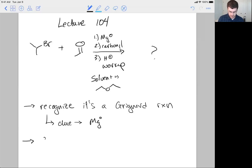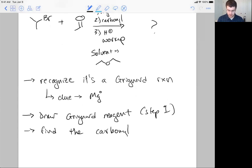Number two, I would say, draw the Grignard reagent, which is step one, and then find the carbonyl. Okay, so let's do those things. So the carbonyl is part of step two. So the Grignard reagent,